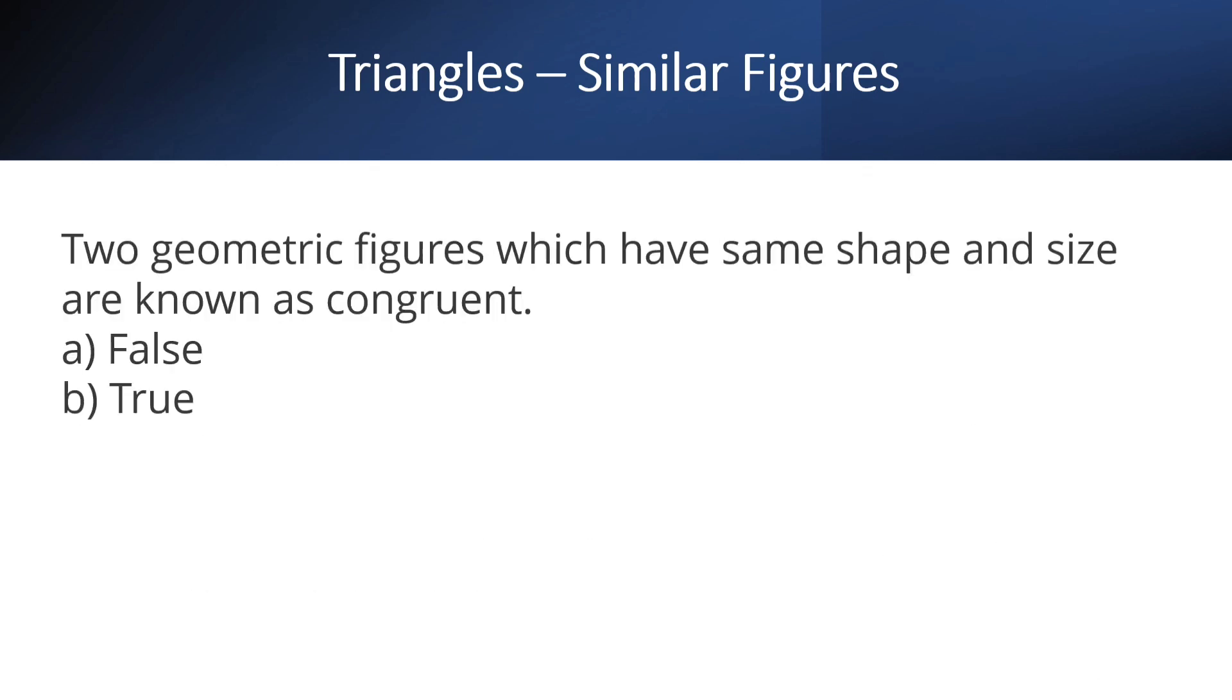Two geometric figures which have the same shape and size are known as congruent. True or false. Same shape and size, for example, this star and this star have the same shape and same size.